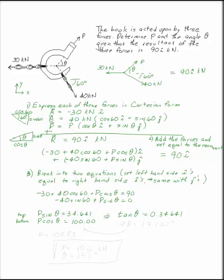So divide the left hand side by the bottom left hand side, and the top right hand side by the bottom right hand side. You can solve that for theta. Theta is 19.107 degrees. Plug that value of theta into either of these equations, and you can solve for P: P is 105.83.